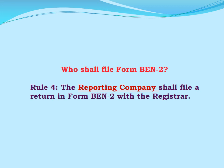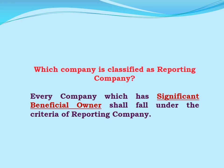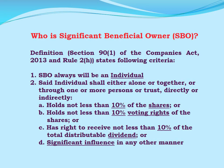Now, in a stepwise manner, we will go through the applicability, the reporting contents of the form, and due dates for filing the form. Who shall file form BEN-2? Rule 4 of these rules states that the reporting company shall file a return of Significant Beneficial Owner in form BEN-2 with the registrar. So which company is classified as a reporting company? The rule states that every company shall fall under the criteria of reporting company.